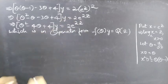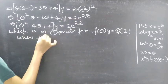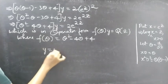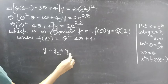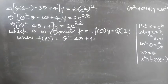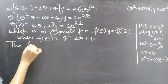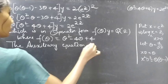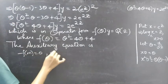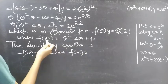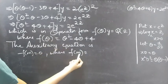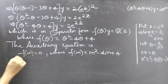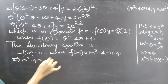We have f(theta) · y equals some function of z, where f(theta) equals theta² minus 4theta plus 4. Now we need to find the general solution y equals yc plus yp. The auxiliary equation is f(m) equals 0, where f(m) equals m² minus 4m plus 4.